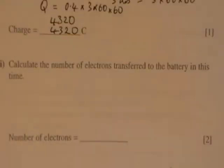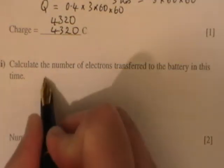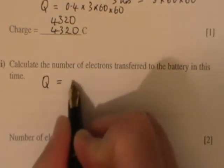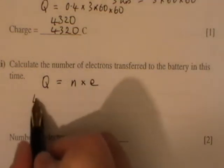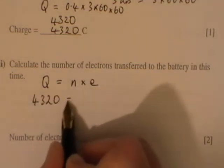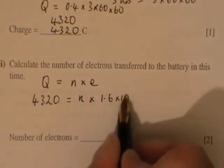Calculate the number of electrons transferred to the battery in this time. So the total charge Q is equal to the number of electrons times the electronic charge, therefore 4320 is equal to the number of electrons times 1.6 times 10 to minus 19.